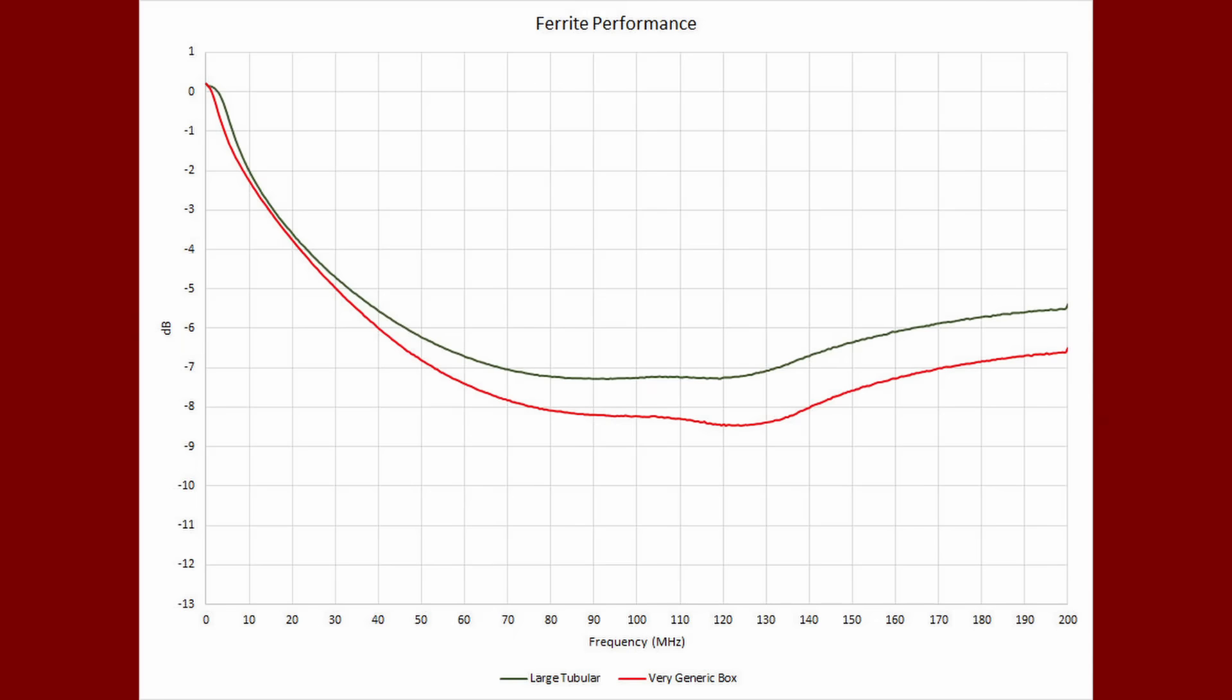Now, let's see what this ferrite clip-on does. Here are those results. The shape of the curve is very similar to the others, and the benefit at 10 MHz is almost identical. But look at its performance at 70 MHz. The tubular bead gives us 7.3 dB. The generic box-style sits at 7.8 dB, just a half a dB better, whereas the genuine ferrite box-style is 9.7 dB.